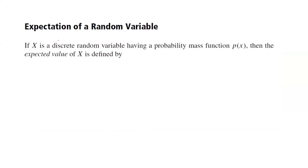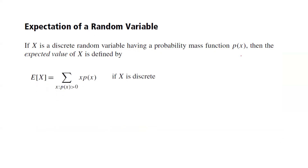Let us introduce the expectation of a random variable. If X is a discrete random variable having a probability mass function P(x), then the expected value of X, denoted E(X), is defined as the summation of x times P(x). If X is continuous, we use the integral: E(X) equals the integral from negative infinity to infinity of x times f(x) dx.